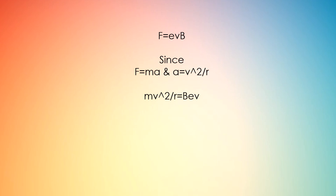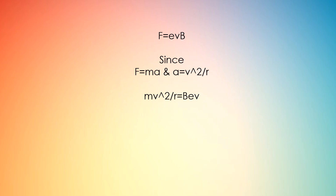The centripetal acceleration is given by a equals v squared over r, and since force equals mass times acceleration, as well as ev times B, we can assume that the following equation is valid: m times the centripetal acceleration, which is v squared over r, equals the other force, which is B times e times v.